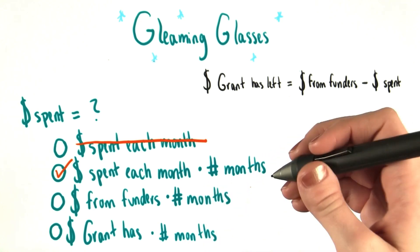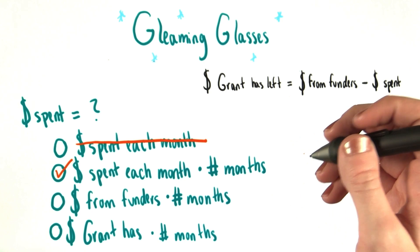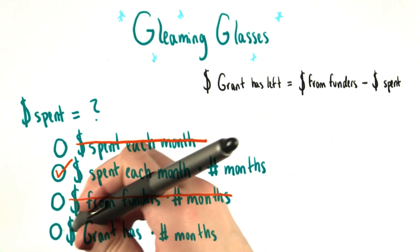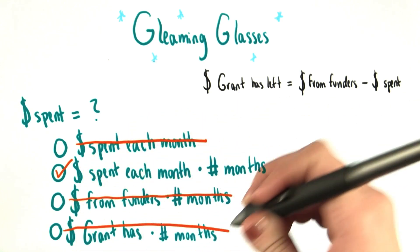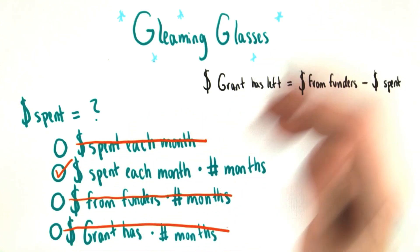These two bottom answers don't involve the amount of money that Grant is spending, so we can just eliminate them also for good measure. Great job on this quiz.